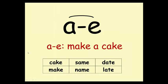Now, this is slightly different. This is the A split E sound. There is a letter in between. So it's A — make a cake. Here are some words: cake, same, date, make, name, late.